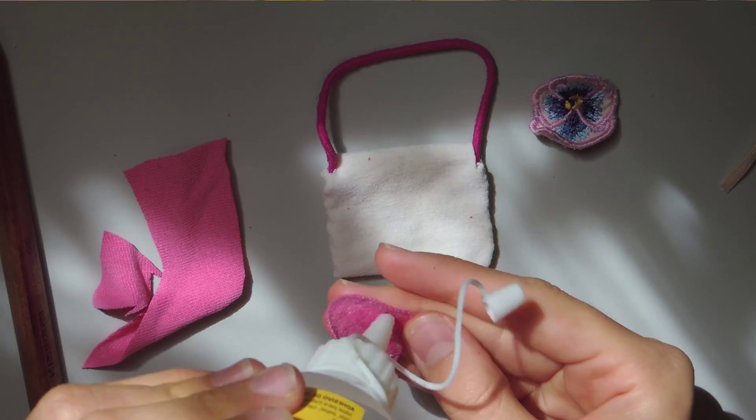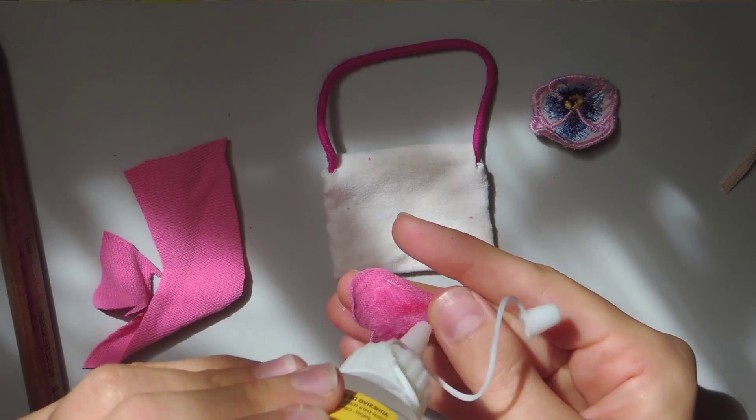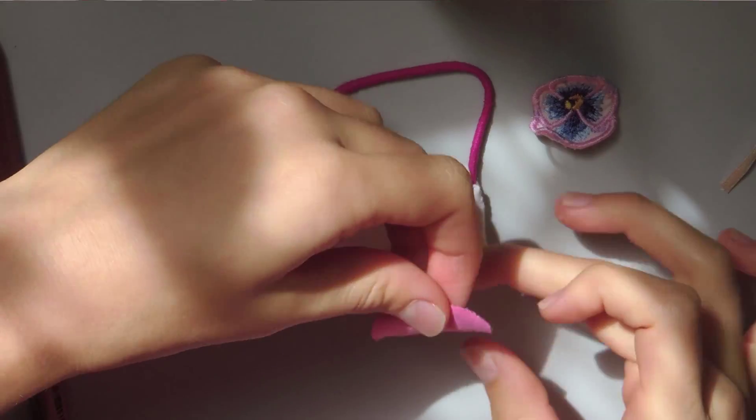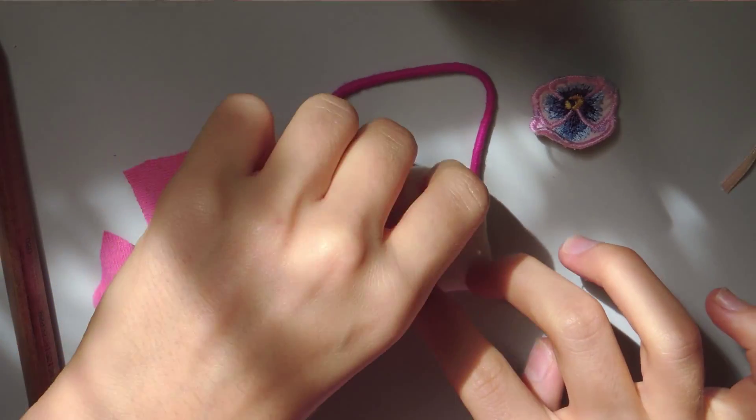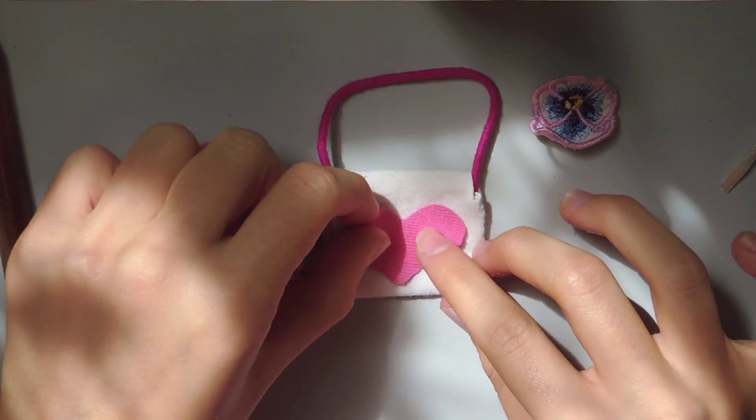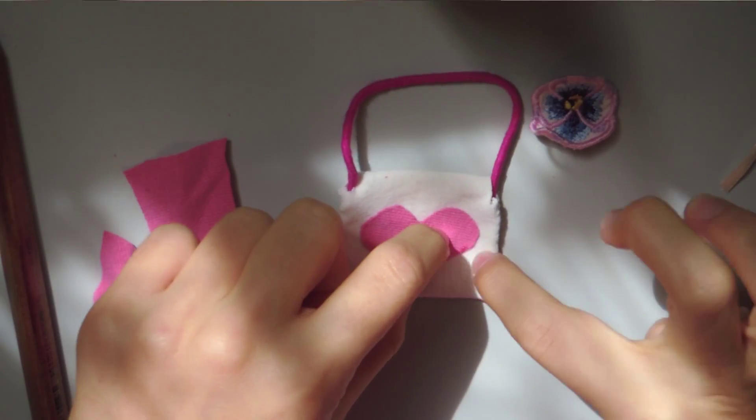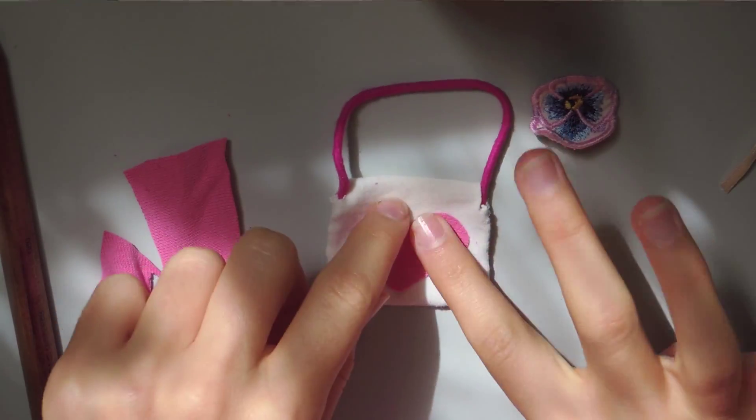Now you can decorate your bag with anything you want from beads to glitter to cut out hearts to flowers. I cut out a heart here and I'm gluing it onto the back of my bag. I'm using a silicone glue but you can use any glue that works for you.